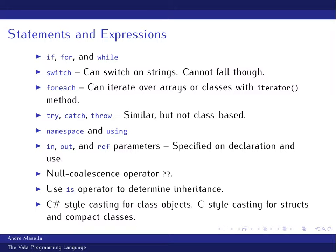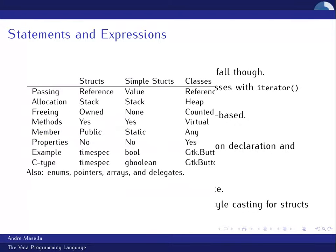Casting is a little strange. When you cast class objects, it behaves like C# — it does an inheritance and type check to make sure you're doing the reasonable thing. When you cast other things, particularly structs and what Vala calls compact classes, it just does what C does: you're the boss, I assume you know what you're doing. There are a variety of types in Vala: structs, simple structs, classes, compact classes, enums, pointers, arrays, and delegates.